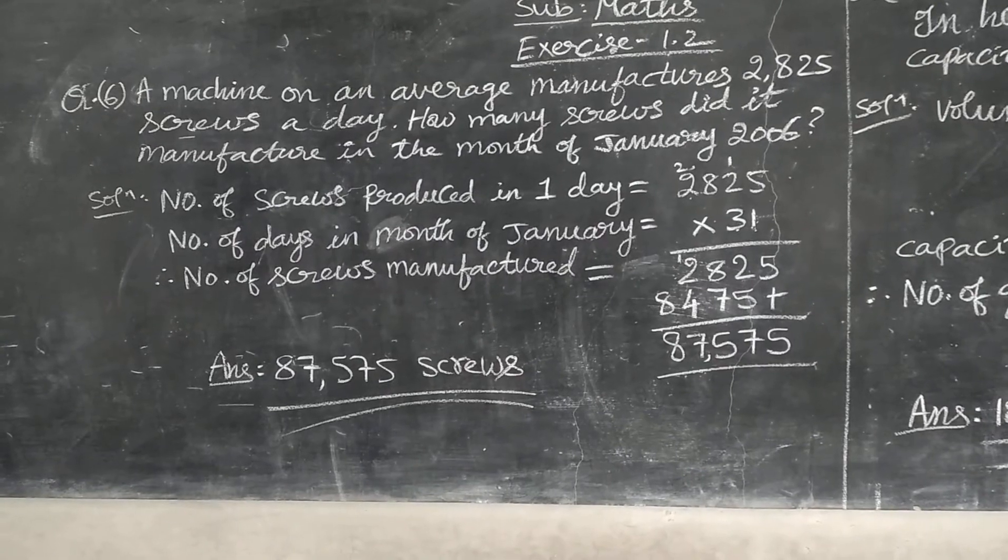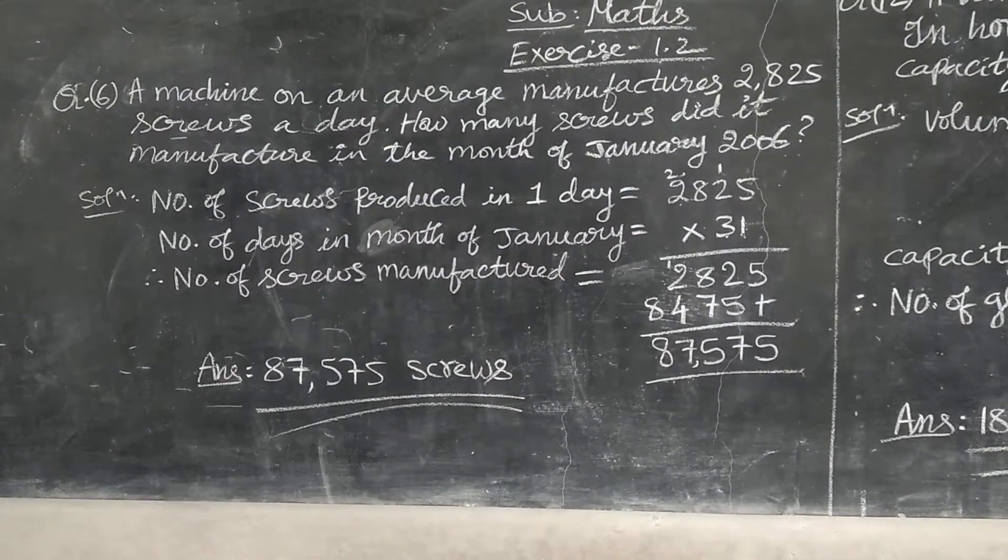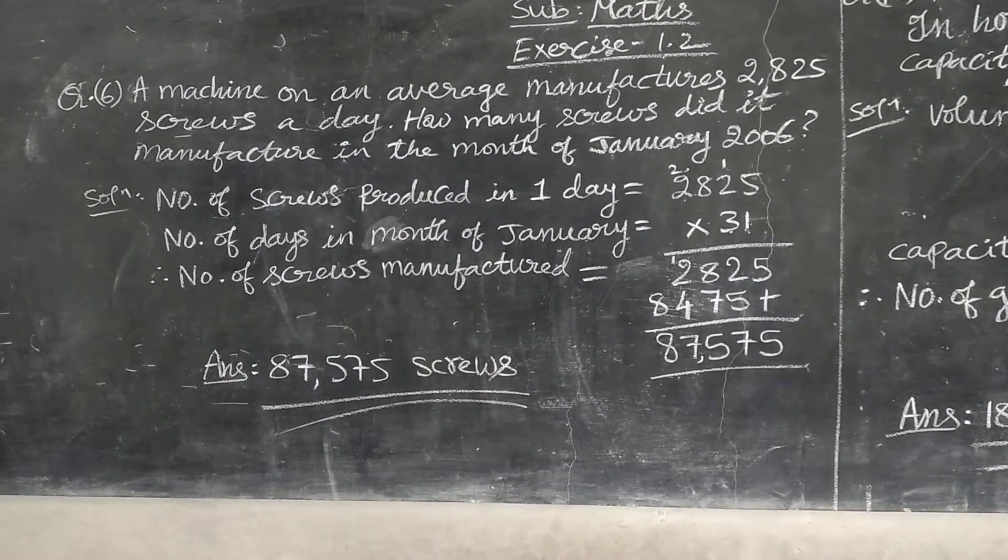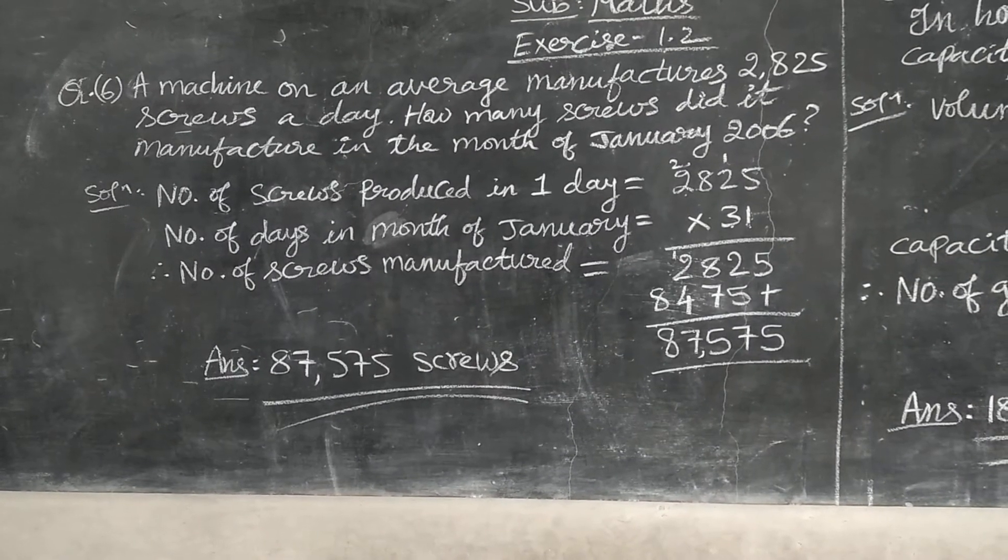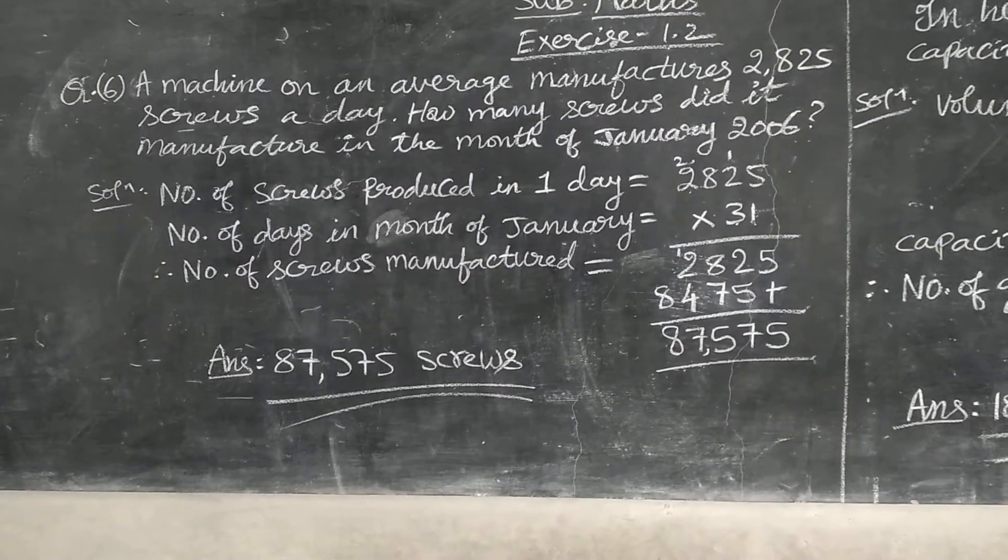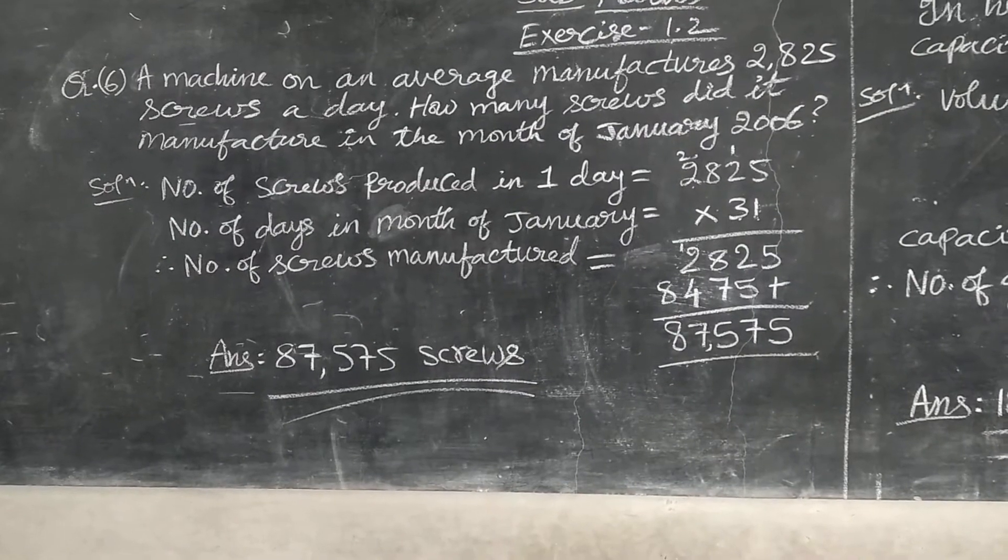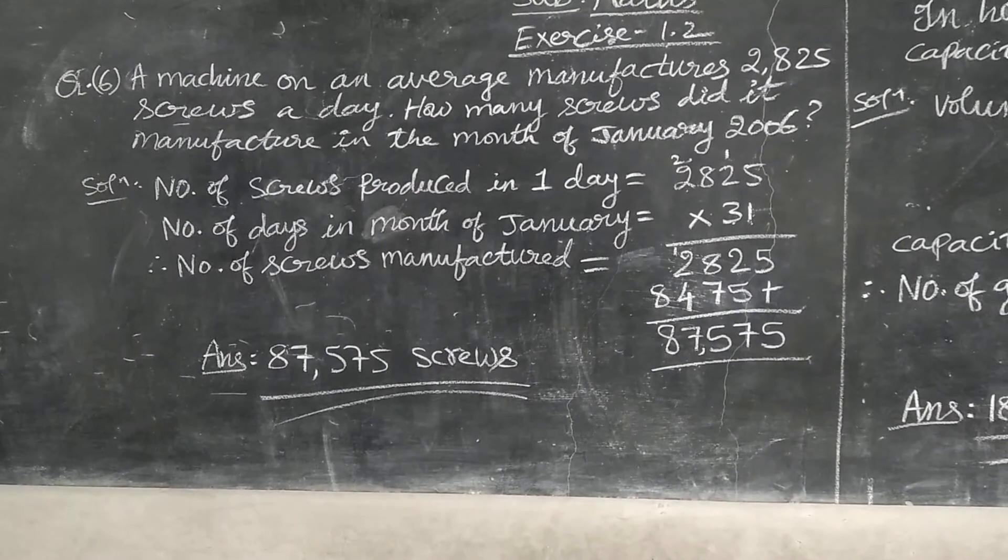So 2825. What he has asked, how many screws did it manufacture in the month of January? In month of January, how many days are there? 31. That sentence you have to write. Number of days in month of January is equal to 31.